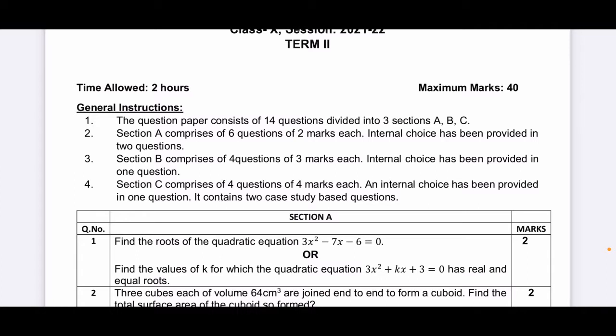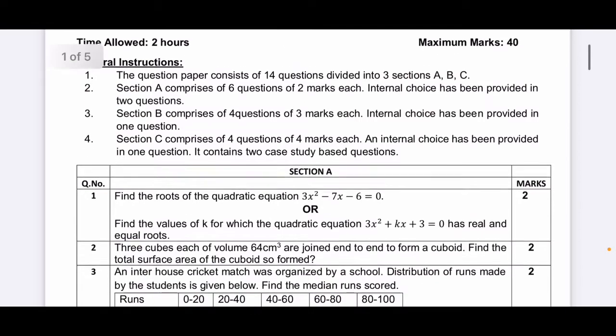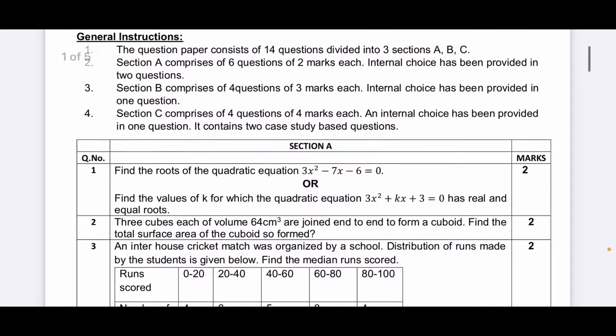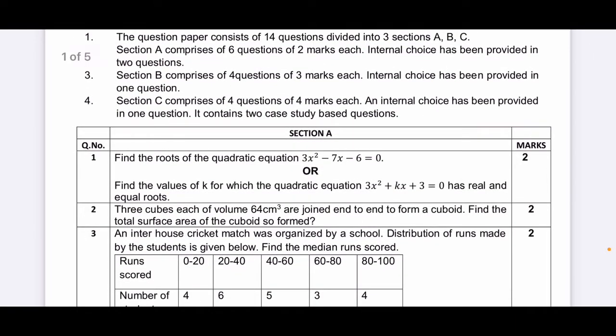Then Section B has 4 questions of 3 marks each, and you will get internal choice in 1 question. Then Section C will have 4 questions of 4 marks each, and you will get internal choice in 1 question.